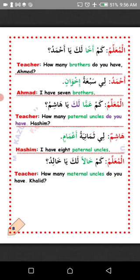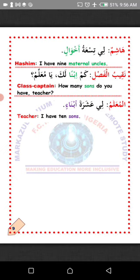Al-muallim — Teacher: Kam khalan laka ya Khalid? How many maternal uncles do you have — a maternal uncle is from the side of your mother. Answer: Li tis'atu akhwalin — I have nine maternal uncles.